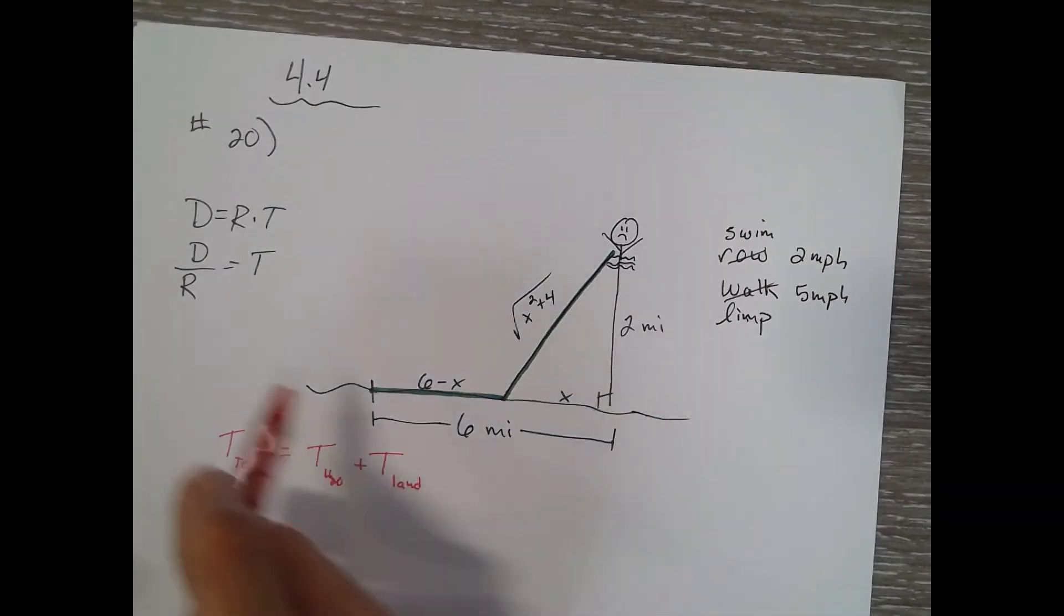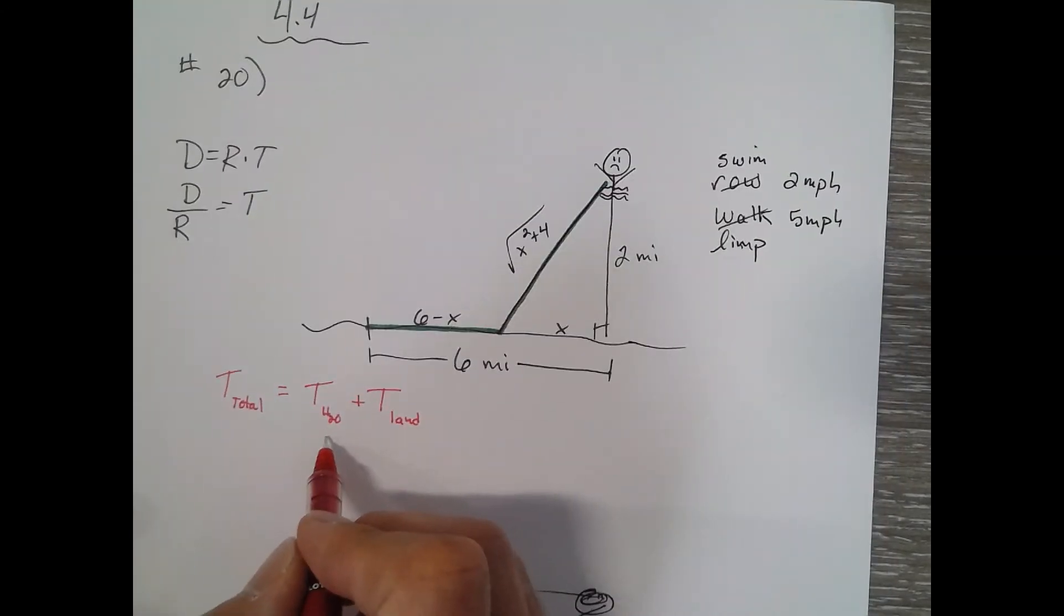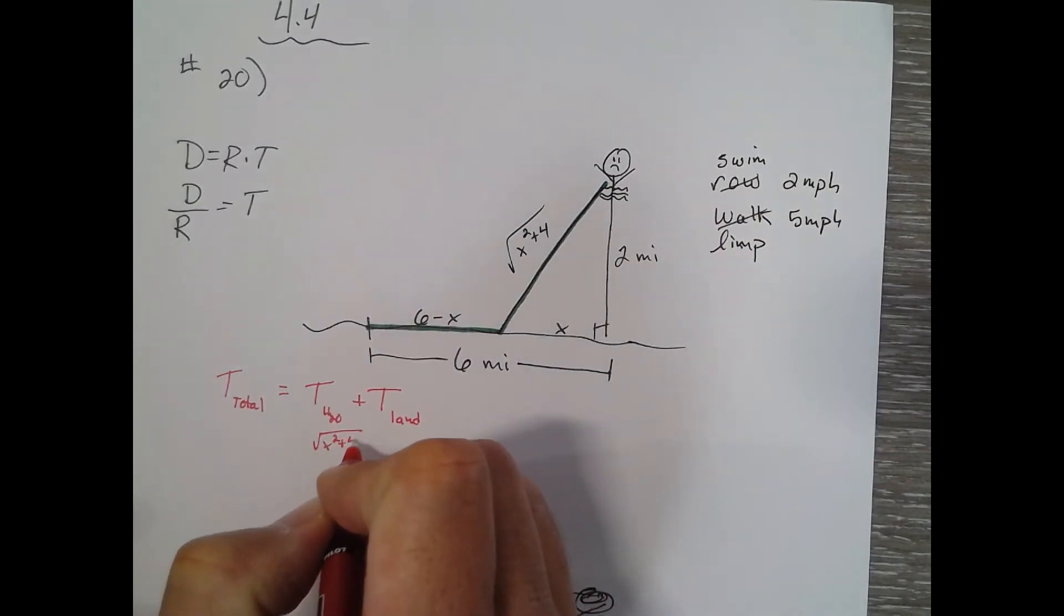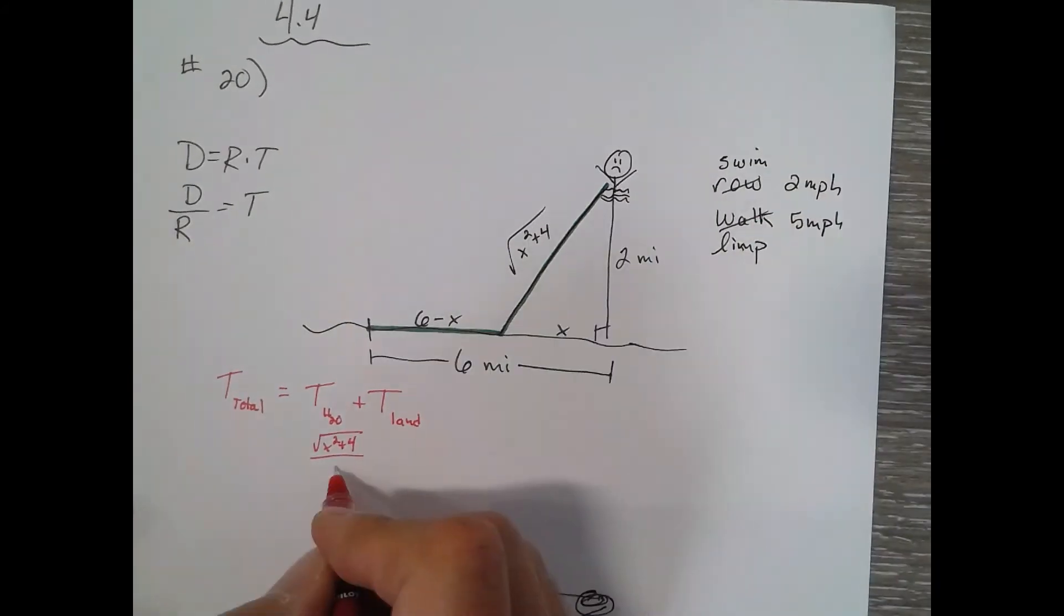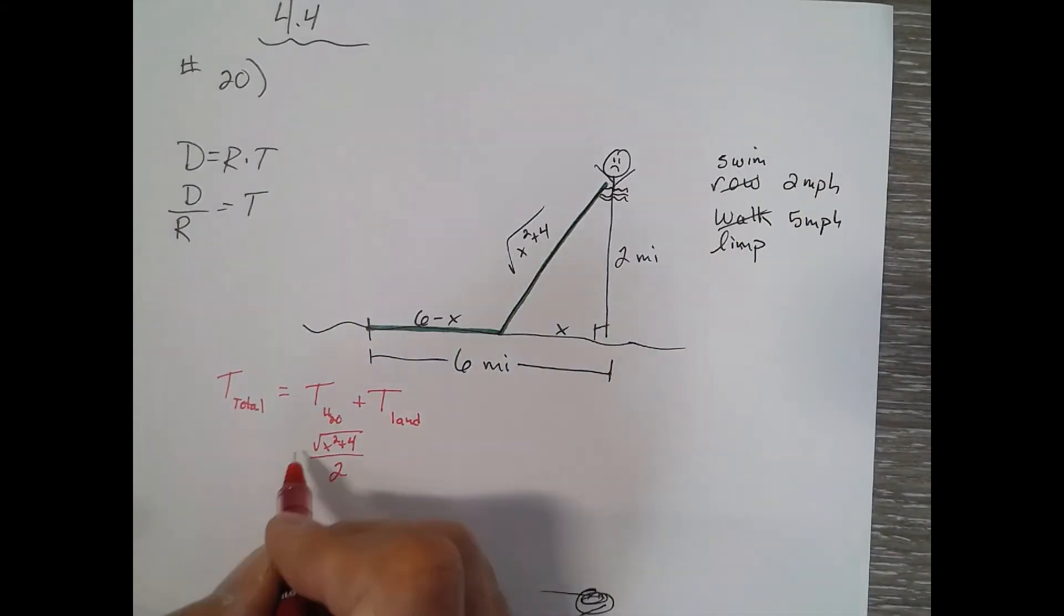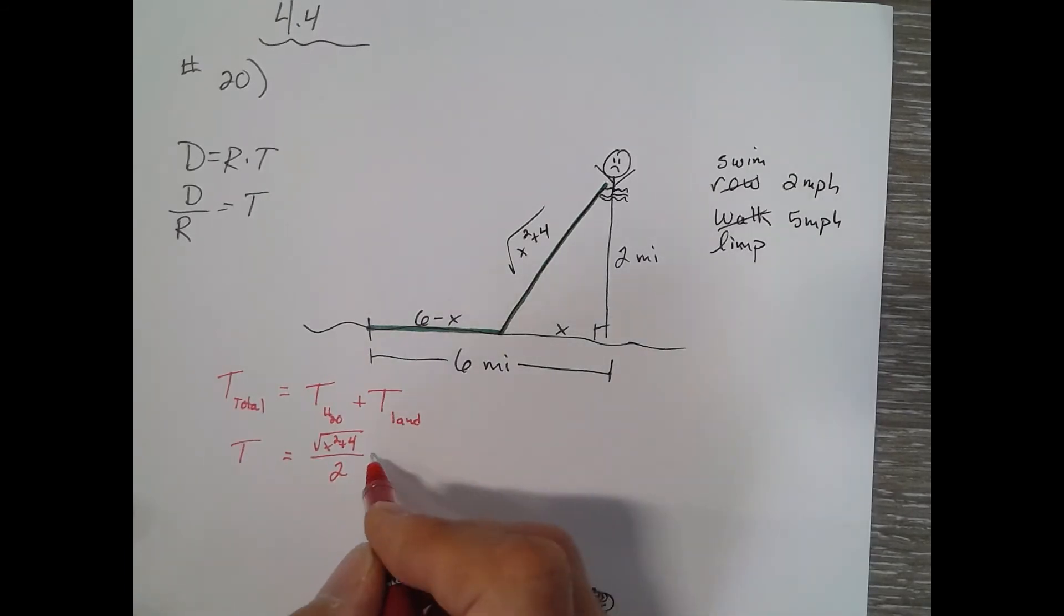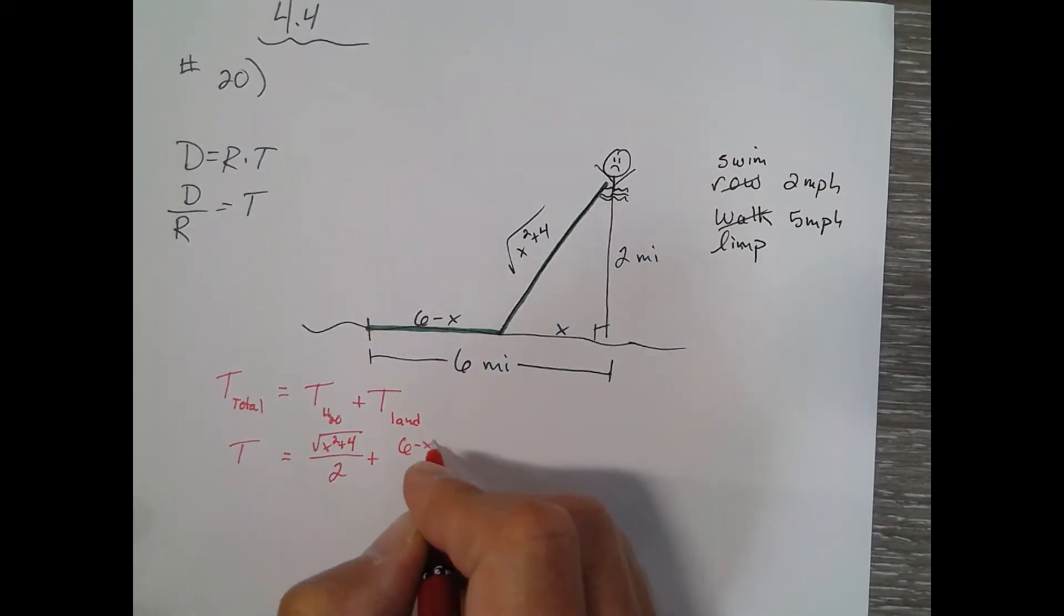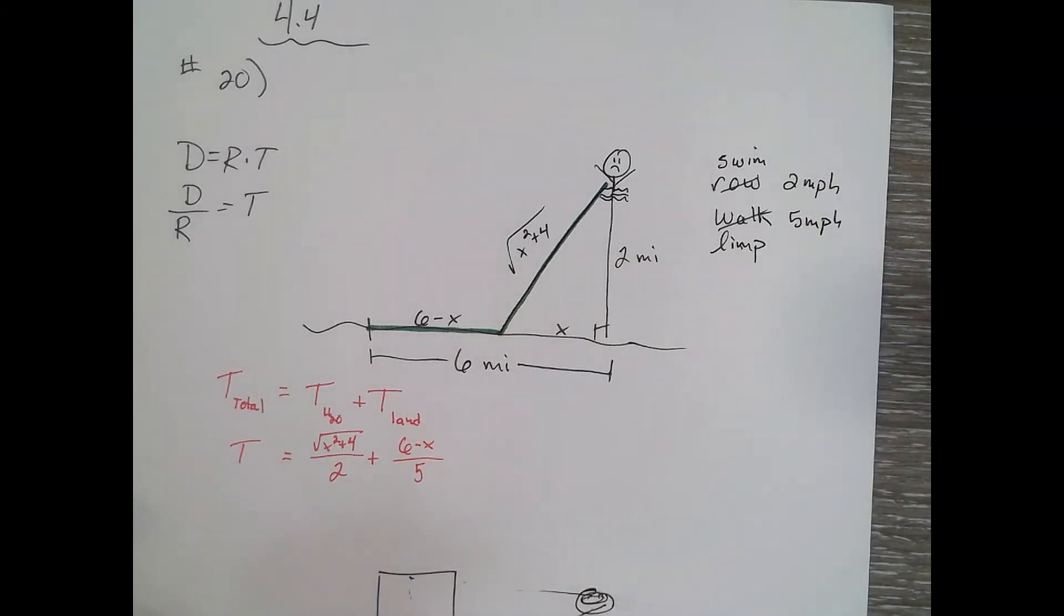The time in the water is equal to the distance in the water divided by the rate in the water. Our distance in the water is square root of x squared plus four divided by our rate in the water which is 2. Our time on land is equal to our distance on land which is 6 minus x divided by our rate on land which is limping at five miles per hour. That's the hard part—we have our equation.